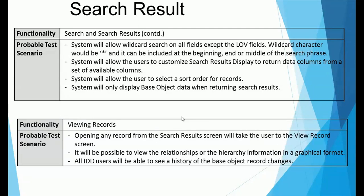After getting results, you can view a record by clicking the open/view icon or by double-clicking the record. It will take you to the next screen showing the detailed section of the record, based on the subject areas and child/grandchild subject areas configured. Opening any record from the search results screen takes the user to the view record screen, where you can see relationships and hierarchy information in graphical format. All IDD users can see the history of base object record changes. In this view, you also get access to the xref record.